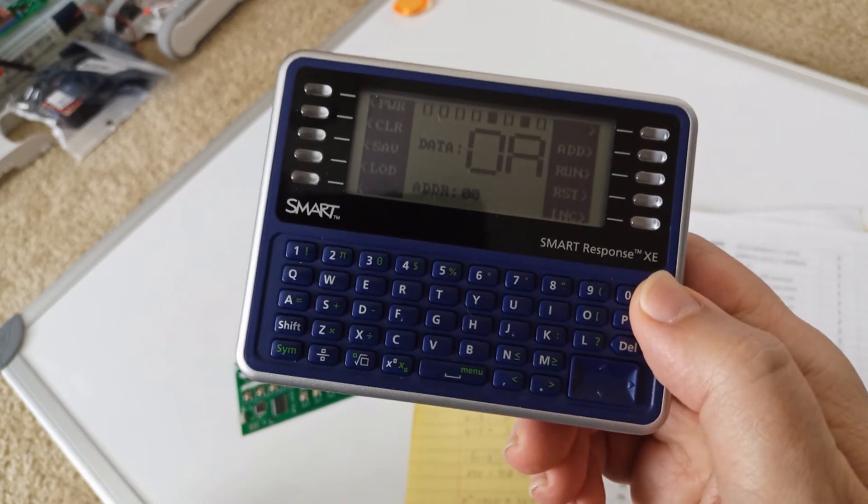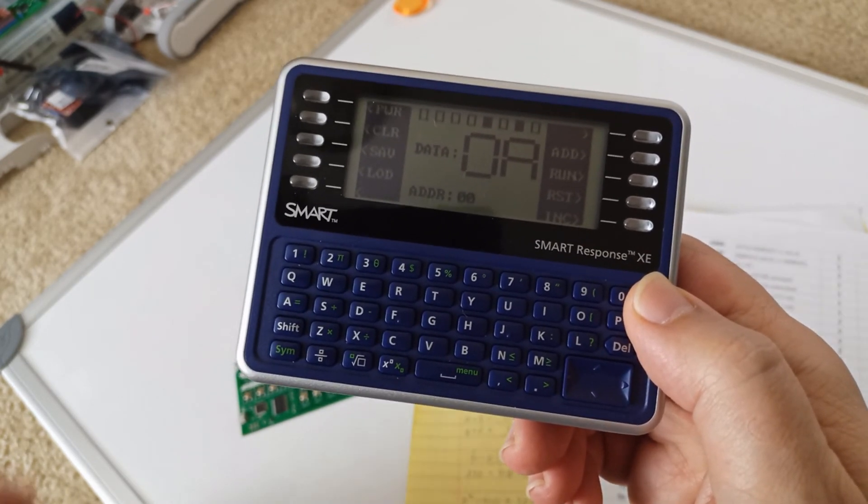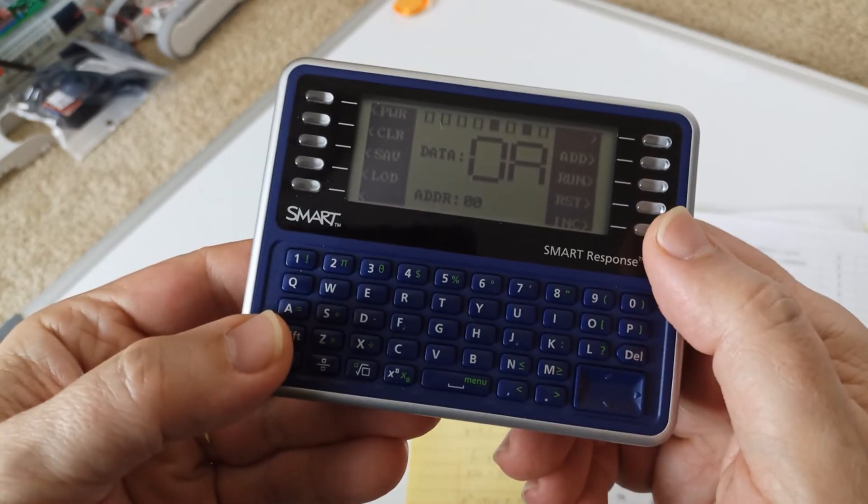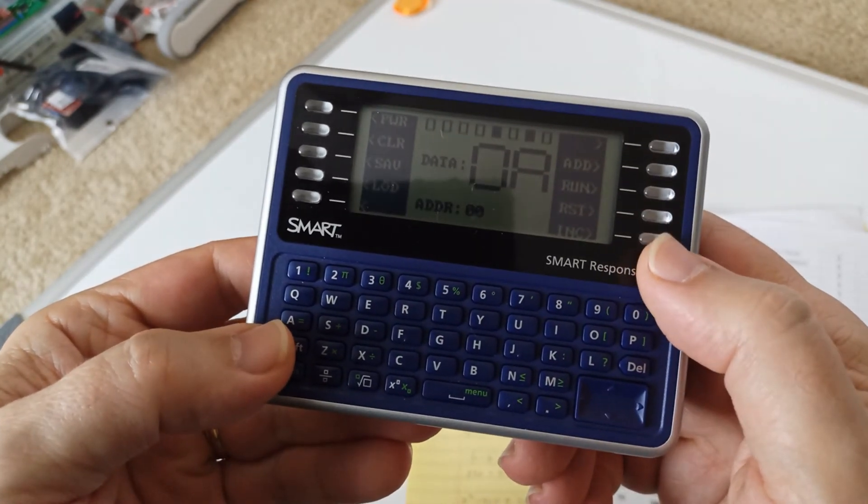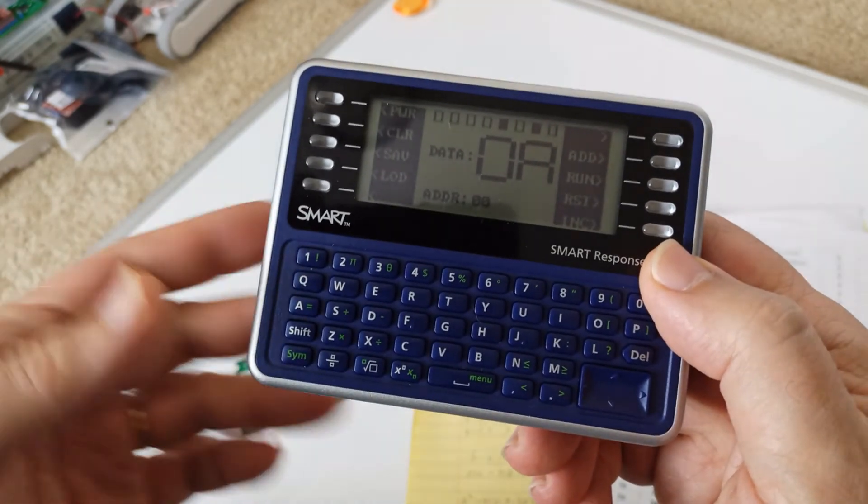And you've got 10 locations to store your programs in. Like I said, I always store the battery monitor in that nine slot. So I always know where it is. And every once in a while, I go and check it.